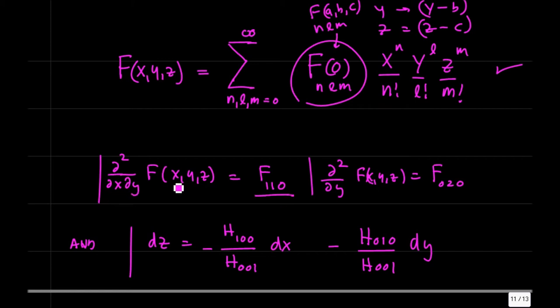d by dx, second partial of f with respect to x and y is written like this. So, we have one derivative of x, one derivative of y, zero derivatives of z, f one, one, zero. Second partial of f with respect to y, so no derivatives of x, two of y, zero of z, so we have zero, two, zero.